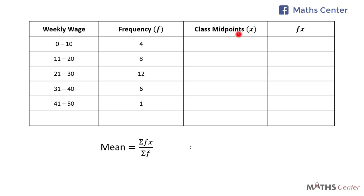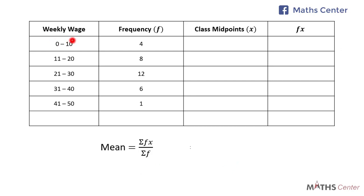Now let's find the x values — the class midpoints. To get the class midpoints we add the lower class limit to the upper class limit and divide the result by 2. So the first one is 0 plus 10 divided by 2, which gives us 5. The next is 11 plus 20 divided by 2, that is 15.5. Then 21 plus 30 divided by 2, that is 25.5. The next is 31 plus 40 divided by 2, which gives us 35.5.